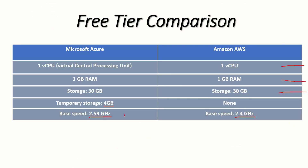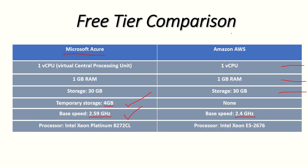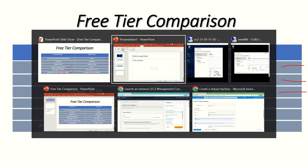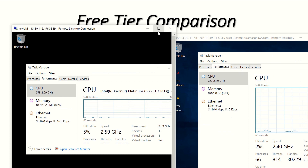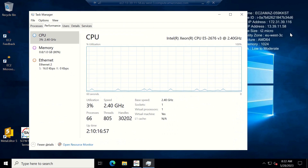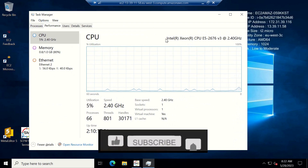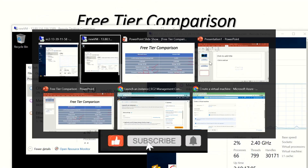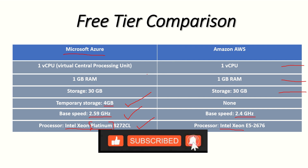Next we'll compare the processors. Azure has an Intel Xeon Platinum processor while the AWS version has an Intel Xeon — the Platinum is definitely more powerful, the name gives it away. Confirmed in Task Manager under Performance > CPU: Azure shows Intel Xeon Platinum, and AWS shows Intel Xeon. That's another win for Azure, which is definitely taking the upper hand so far.